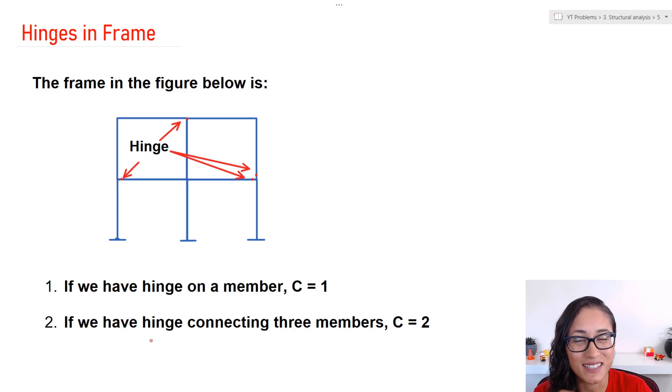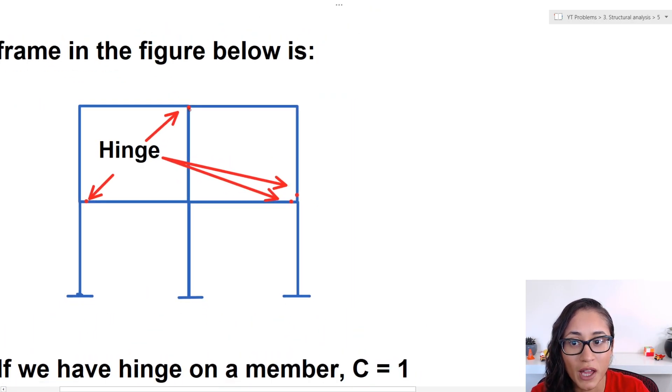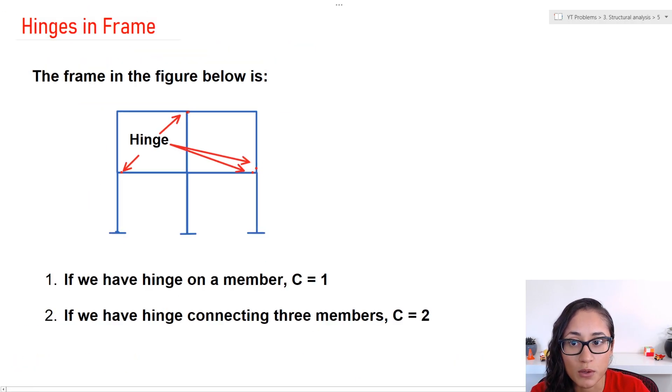Now let's take a look at the second case, which is the one that can be a little bit tricky. Now if you have a hinge that is connecting three members like this one, it's on three members, you don't count it as C is equal to three, because technically this is on this member, on this member, and this member, but we don't count it as three. And that's because here we have three moment equations, right? And if those two moments equations are satisfied, automatically the third moment equation is satisfied as well. So the hinge has only two independent equations, and that is why we calculate C to be two.